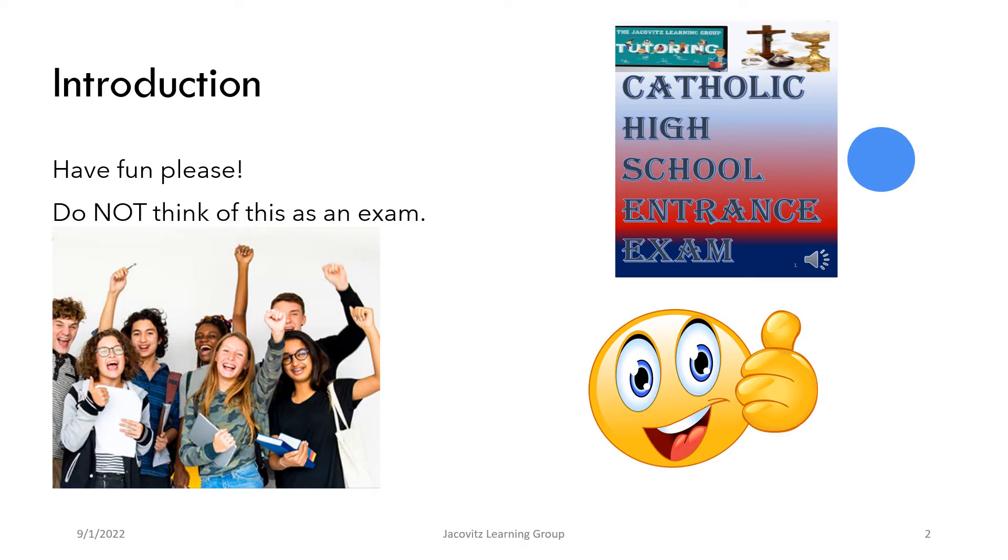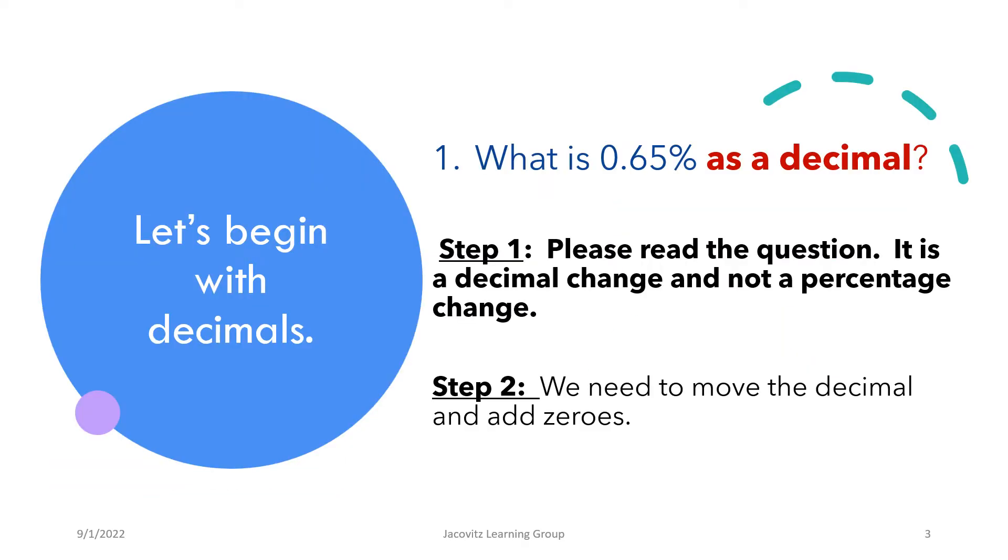Okay, look. Let's begin with a simple one, 0.65%. Read the question. It's asking you to change 0.65% to a decimal, not to a fraction. Keep this simple. You should be under two minutes to do this.